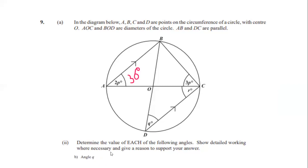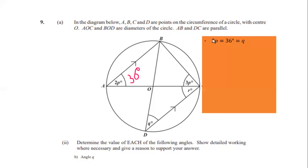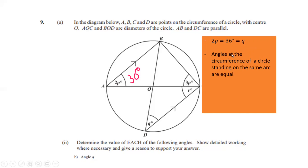Part b asks us to calculate angle Q. We just found angle A (2p) = 36 degrees. From circle theorem, when two angles stand on the same arc, they are equal. So 2p = Q = 36 degrees. The reason is: angles at the circumference of a circle standing on the same arc are equal, or angles in the same segment of a circle are equal.